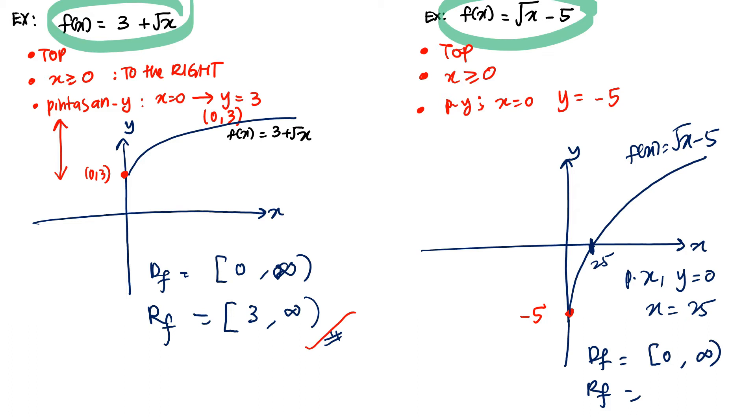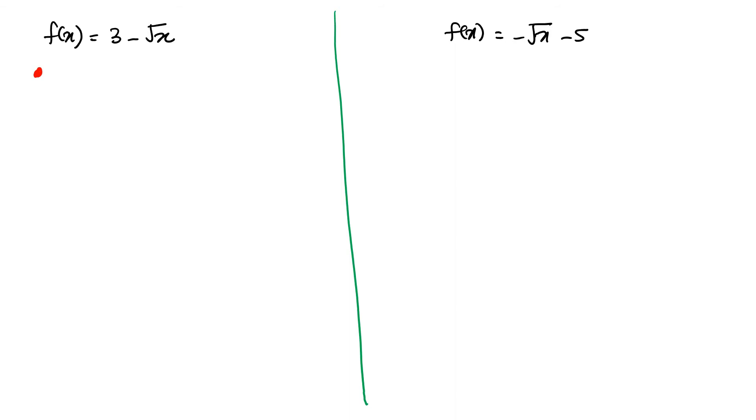Domain is zero to infinity. This is your domain. How about your range? Your range, you look at your graph from the lowest point going upward. So the lowest point is where? Negative five goes to infinity. So graphing has no problem. Not difficult at all, very easy. You follow the steps.